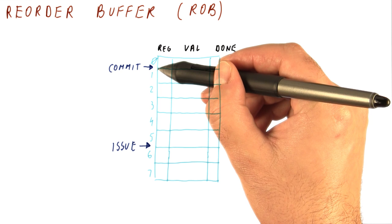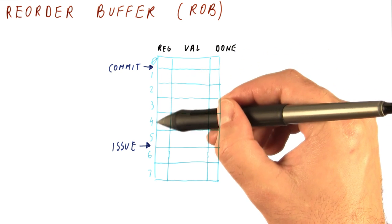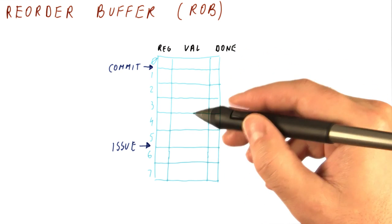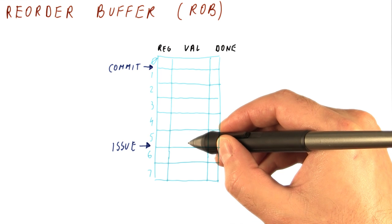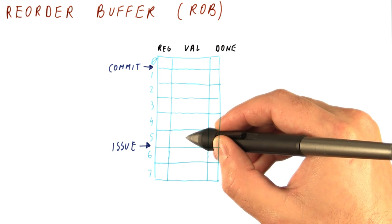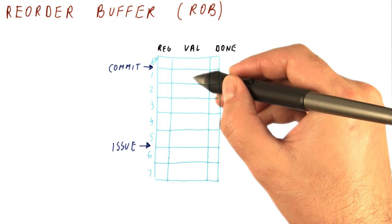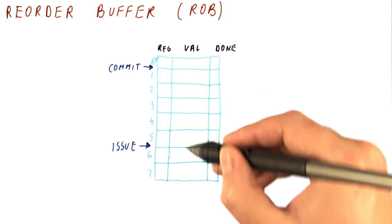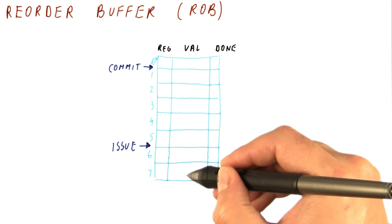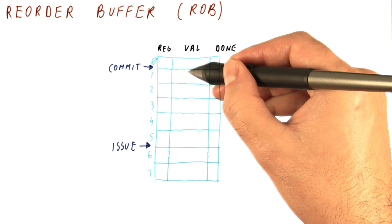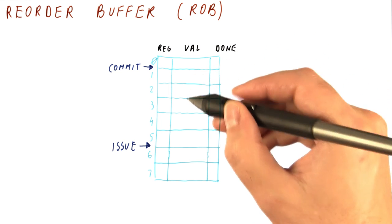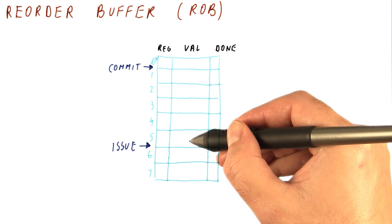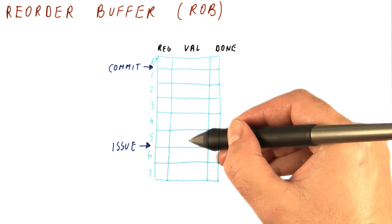So in this particular reorder buffer, the instructions that are actually valid are starting from the oldest one to the newest one, this. The even newer instructions are going to be added here, and the oldest one will complete from here. So these five instructions are actually in program order in the reorder buffer.